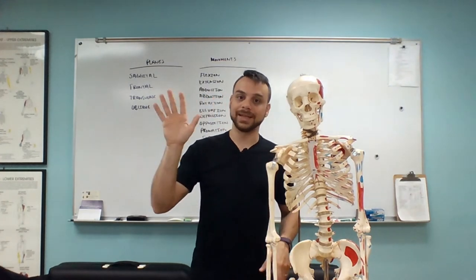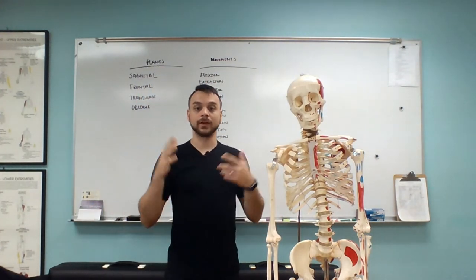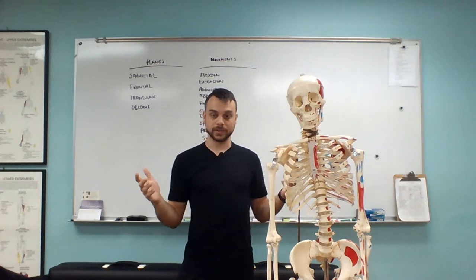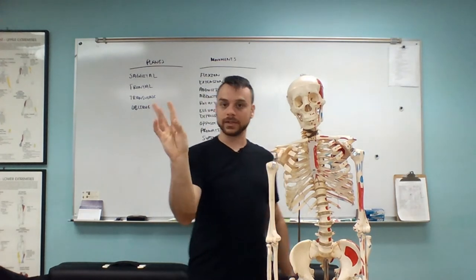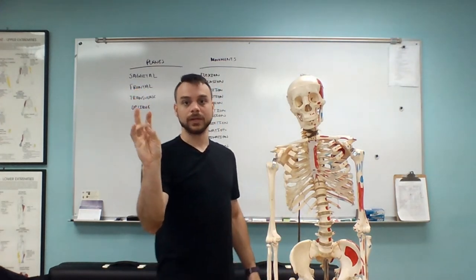Coming to the hand, we have a few movements that can occur here as well. One is pretty intrinsic to just the thumb. We have our opposable thumb, which produces this one movement called opposition. Opposition means to come across the hand and be able to touch the pads of the other fingers. No other digit on your body can touch the pads of the other digits the way the thumb can.